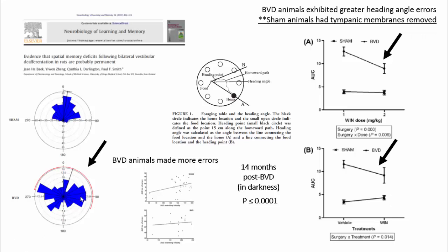One might think this is due to hearing loss. In these experiments we tried to control for this by removing the tympanic membranes in the sham animals — not a complete auditory control, but a partial one. These animals performed much like normal animals compared to the vestibular-lesioned animals. It's also possible the effect could be due to locomotor activity, but we found no statistical relationship between locomotor activity and the number of errors — you could not predict errors from locomotor activity.